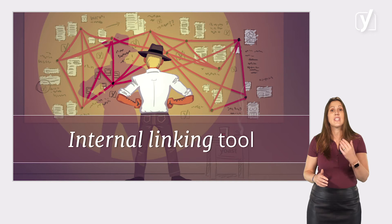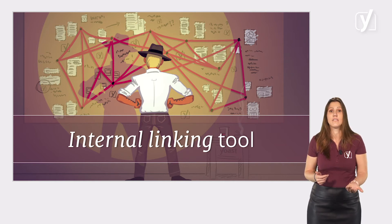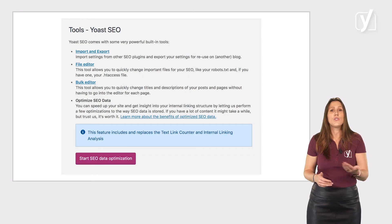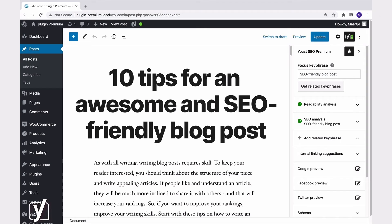The internal linking tool scans and analyzes all the content on your site. Before you can use the internal linking tool, you have to activate this process in the backend of your site. That's simple — just go to the tool settings of Yoast SEO and click this button. Now you're good to go. From this moment, the tool will provide a list of internal linking suggestions for each post you've written before and for the ones you will write in the future. Automatically, this list will appear in the Yoast SEO sidebar.